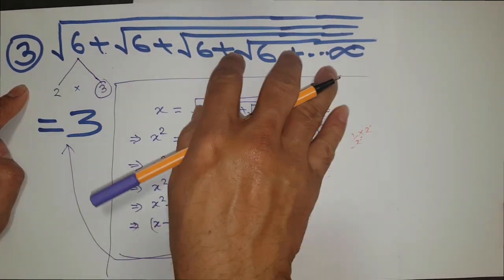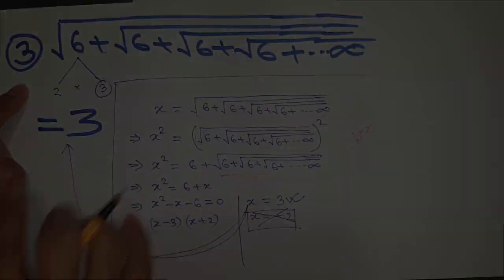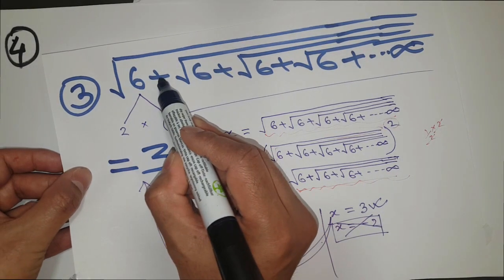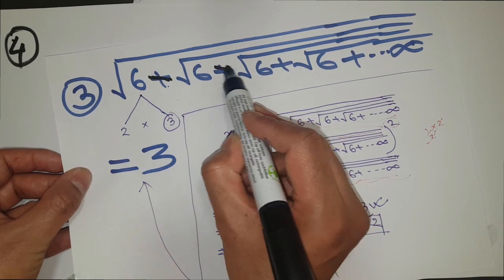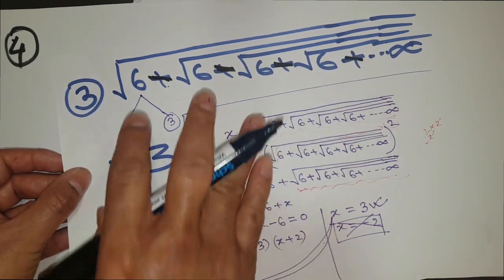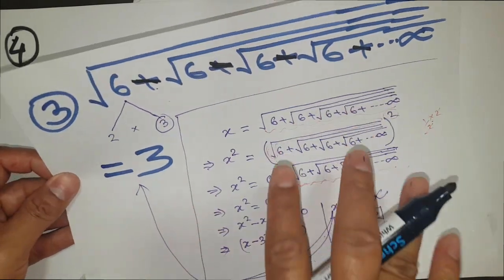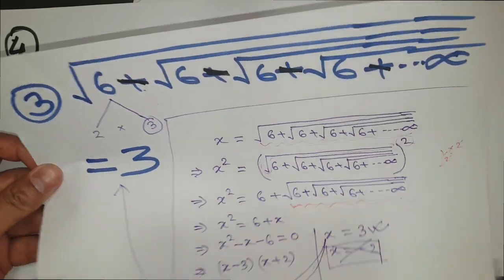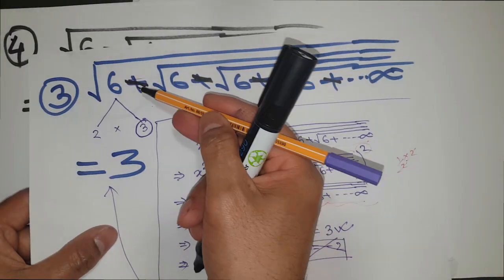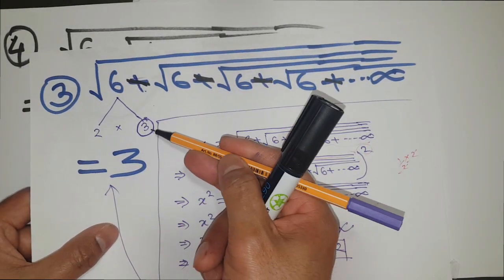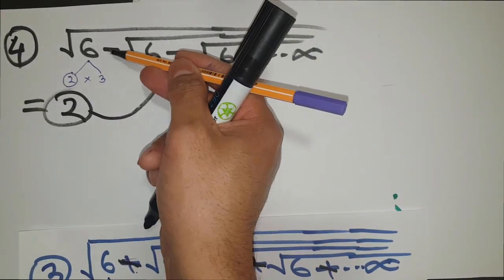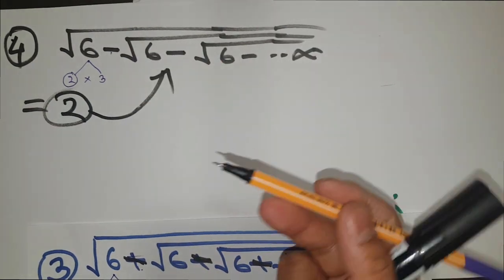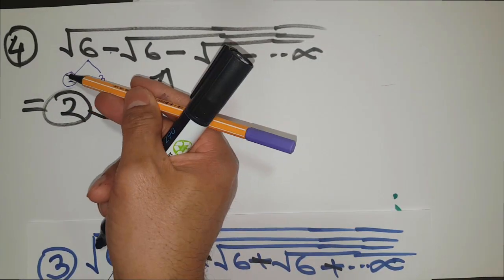What if the sign is not plus but minus? The trick is the same, but the answer is different. The only difference is: for a plus sign, take the largest of the two successive numbers as the final answer, and for a minus sign, take the smallest of the two successive numbers as the final answer.